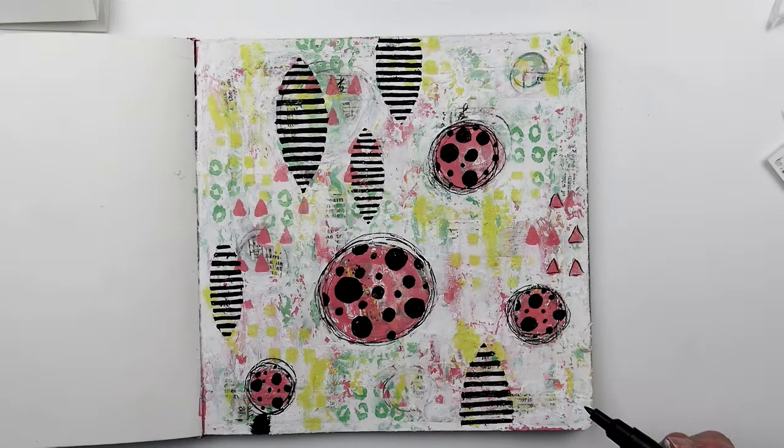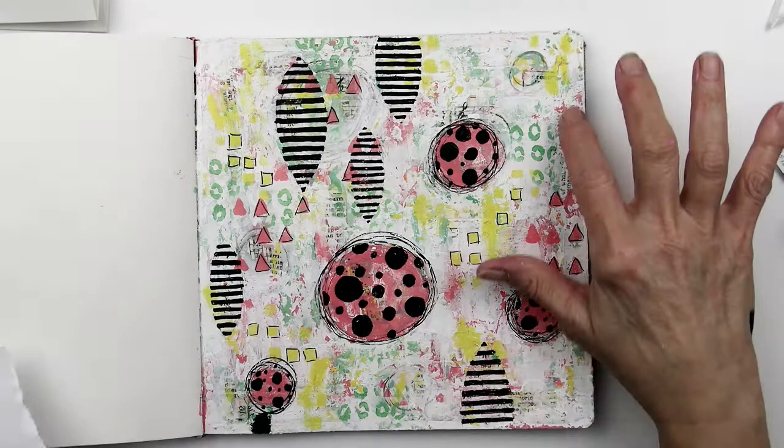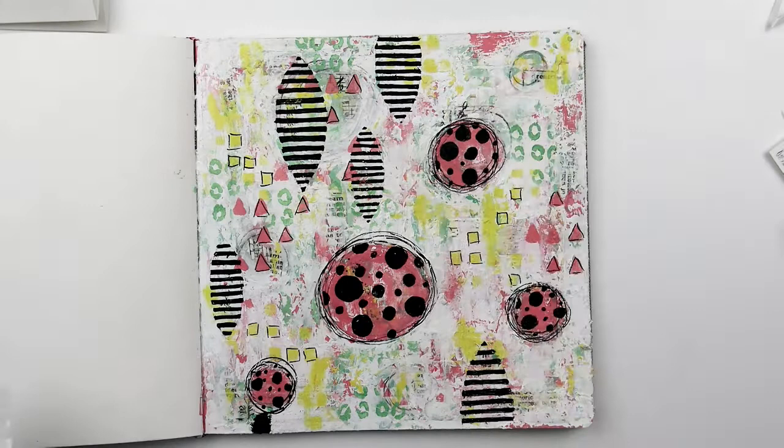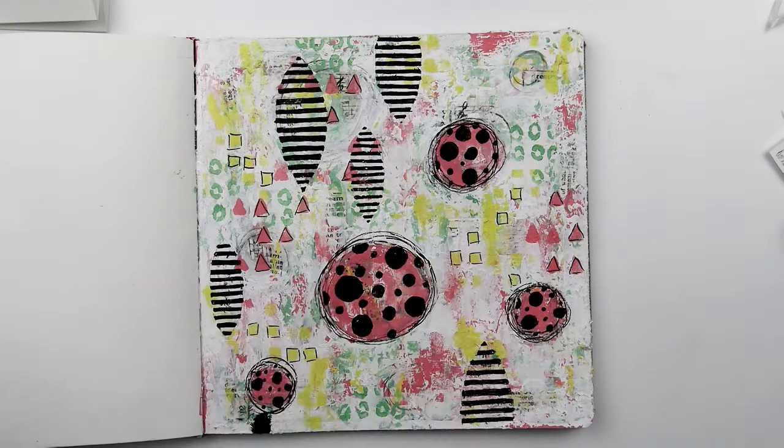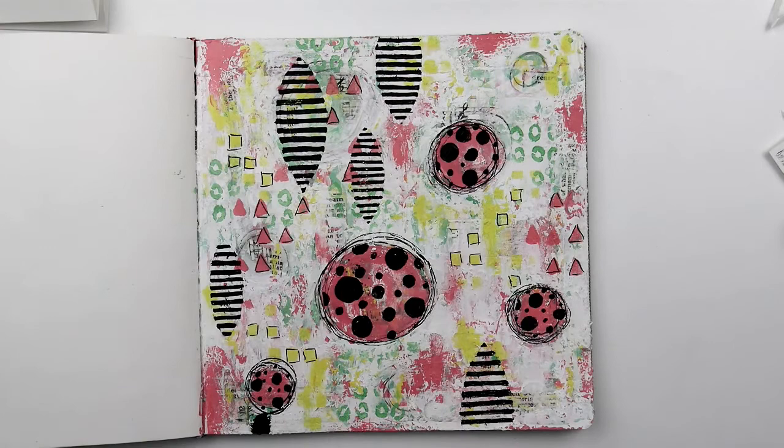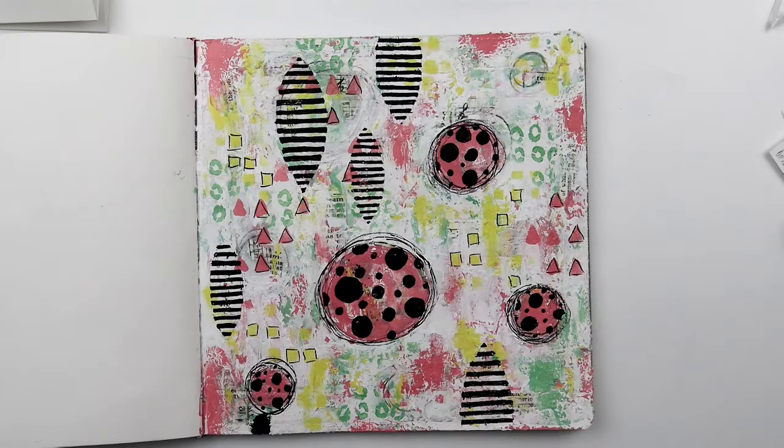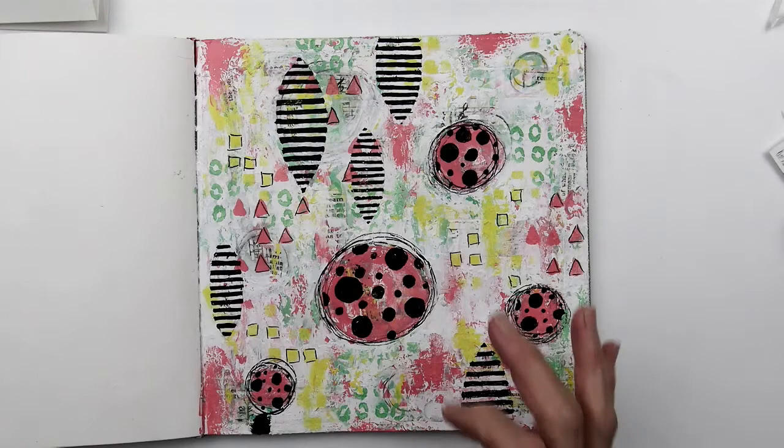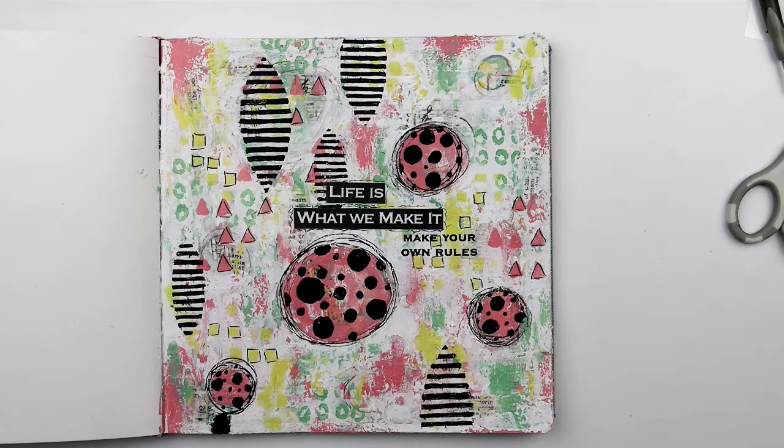I did some doodling around some of the shapes with the Posca pen. And at this point it just felt like it needed just a little more color to finish it up. I added a little more of the coral and the green. I found the journaling in my scrapbook stash and that wrapped this project up.